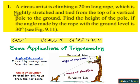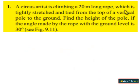Moving on to the first question. A circus artist is climbing a 20 meter long rope which is tightly stretched and tied from the top of the vertical pole to the ground. Find the height of the pole if the angle made by the rope with the ground level is 30 degrees.